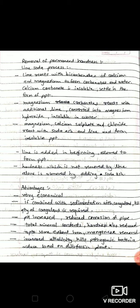Magnesium, calcium sulfate, and chloride react with soda ash and lime to form insoluble precipitation. Lime is added in the beginning which allows the precipitation to form. The hardness which is not removed by lime alone is removed by adding soda ash.